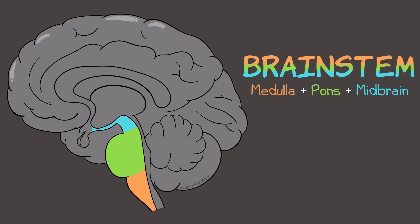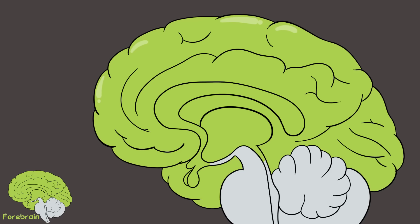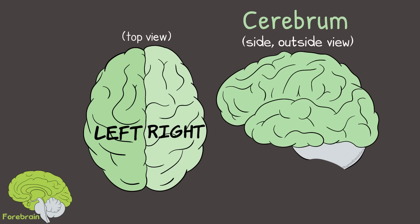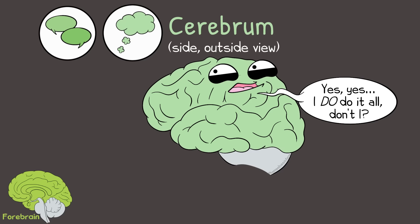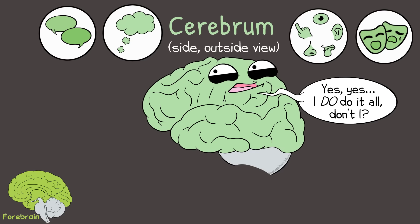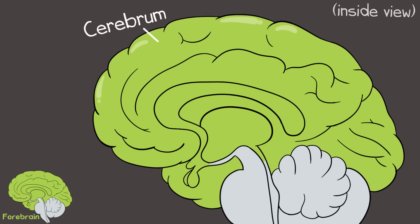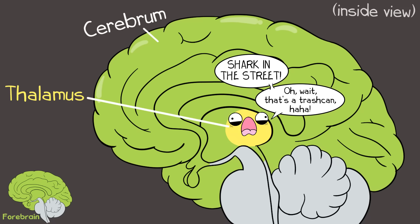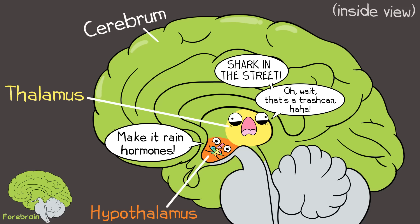The term brainstem includes the medulla, pons, and midbrain specifically. Finally, the forebrain — most notably the cerebrum, which is divided into right and left hemispheres. So many functions are done by the cerebrum depending on specific location: speech, thinking and reasoning, sensing, emotions. The forebrain also includes the thalamus, involved with sensory and motor information, and the hypothalamus, which — as mentioned in our endocrine system video — has major control of the endocrine system.